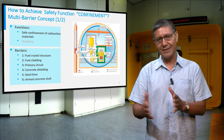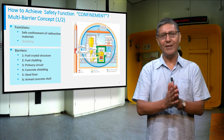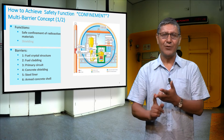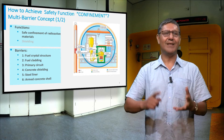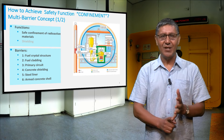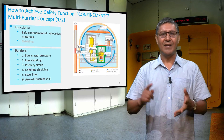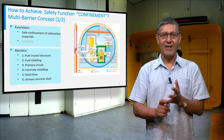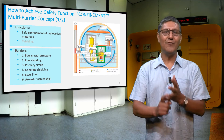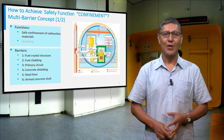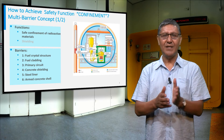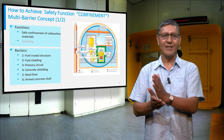These physical barriers are the fuel matrix itself, the cladding, the reactor pressure vessel and the primary circuit, the concrete shielding, and the containment building consisting of an inner steel liner and a reinforced concrete dome. You can see all of these barriers in the figure on the screen.